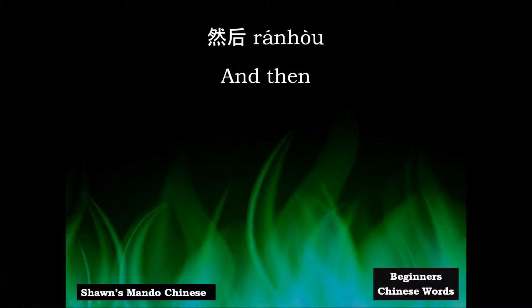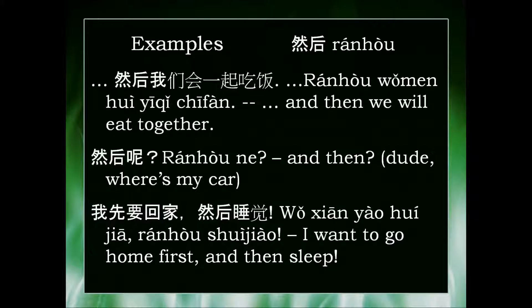Hey guys, this brief video is about the basic Chinese word 然后, which means 'and then.' Here are some examples of how to use 然后 in everyday speech. The first one — obviously because 然后 means 'and then' — assumes some prior context, represented by dot dot dot.